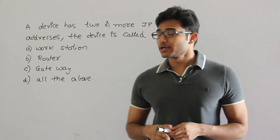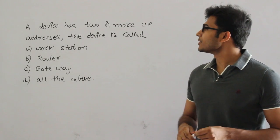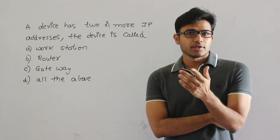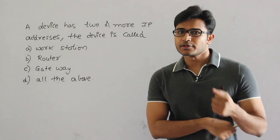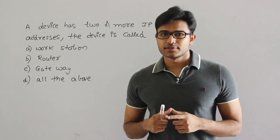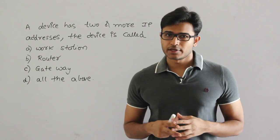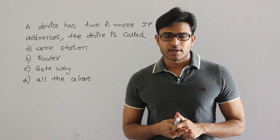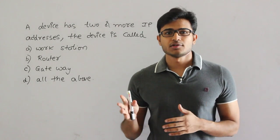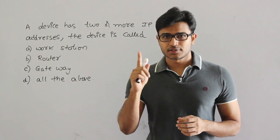So the networking devices — look at this question. A device has two or more IP addresses. They are saying that there is more than one IP address for a network. In computer networks, a device can have more than one IP address, and there are lots of devices which have IP addresses.